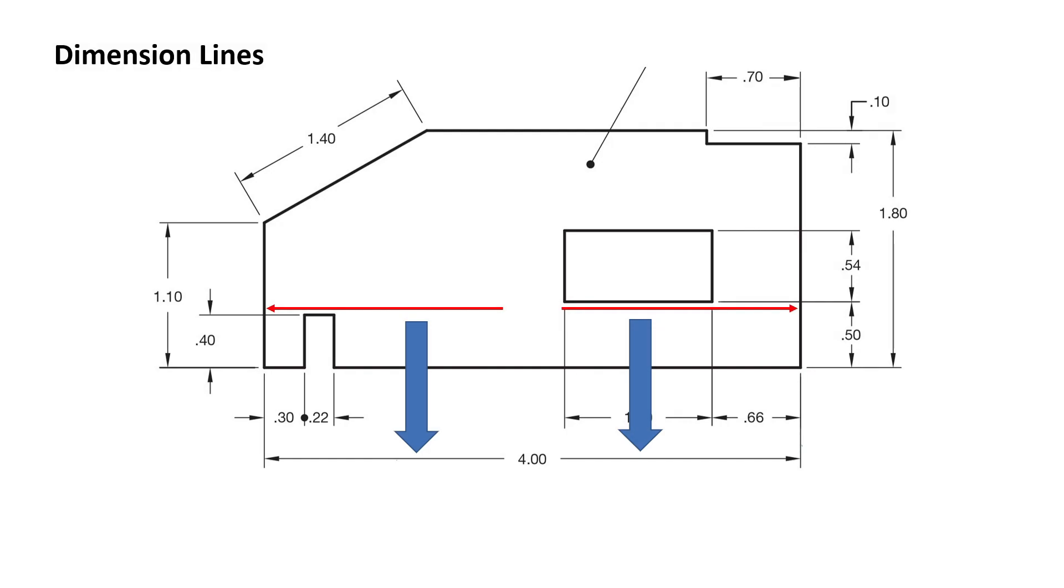When dimensioning linear surfaces, dimension lines are drawn parallel to the feature being considered. Even though dimension lines are drawn parallel to the surface being measured, the dimension itself is written horizontally, along with all other dimensions on the print, or in some cases is written vertically, along with all other dimensions on the print.